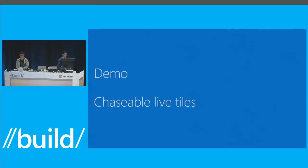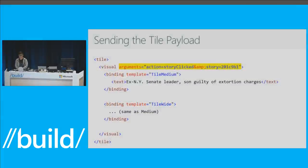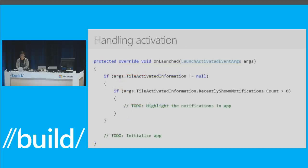We thought that would be a nice thing to address in 2016. It's incredibly simple. You saw the tile payload — we add a simple arguments attribute at either the visual level, or you can even customize on the binding. Just like toasts have always had arguments, now tiles have arguments. In your OnLaunched, you just check the tile activated information. That has a property called recently shown notifications. It's what Start actually showed the user — even though you have five tiles in your queue cycling, we keep it up to date with what Start has actually decided to show, so whatever the user saw, your app will get it.